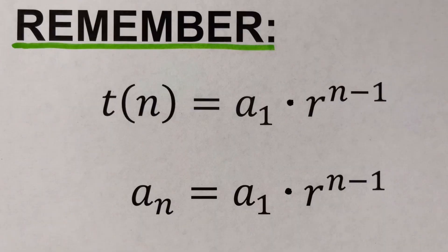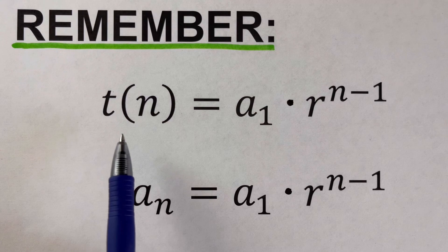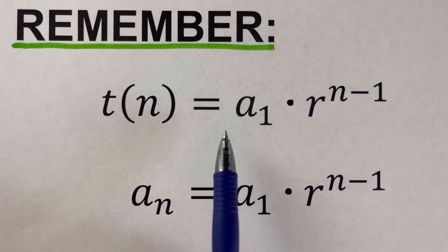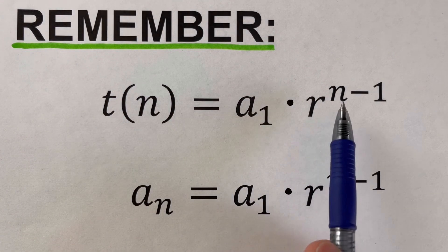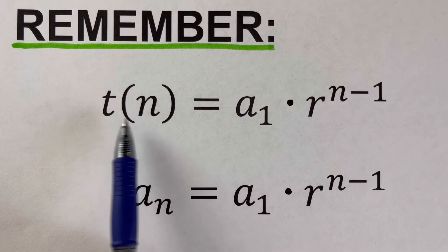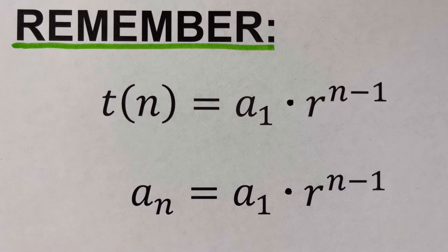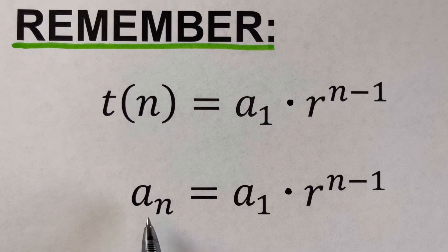The nth term of a geometric sequence is represented by the equation: t(n) equals a sub 1 times r raised to the power n minus 1. This t(n) can also be represented as a sub n — some textbooks use t(n), others use a sub n.